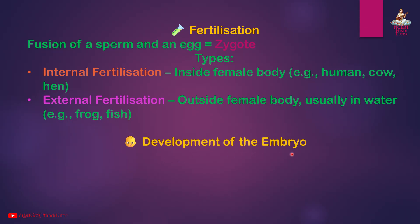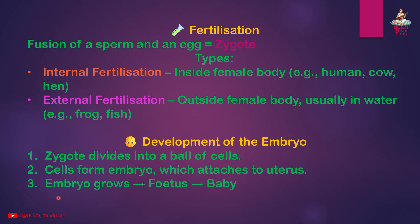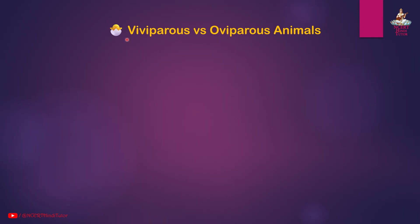Development of the embryo: The zygote divides into a ball of cells. These cells form an embryo, which attaches to the uterus. The embryo grows and eventually develops into a fetus, then a baby.